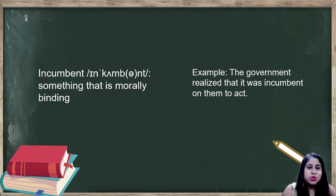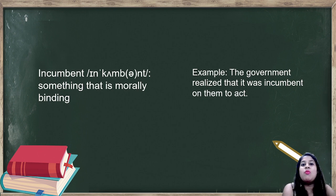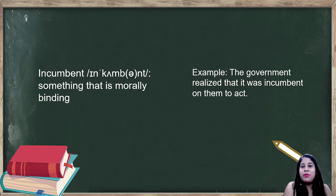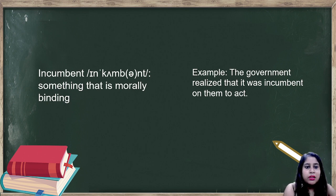Let's start with the first word of the day and that is 'incumbent.' Incumbent means something that is morally binding — morally strong, morally binding — something that holds you to a particular principle. Example: the government realized that it was incumbent on them to act, meaning it was morally very correct to act.